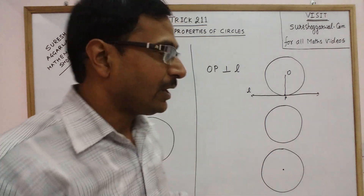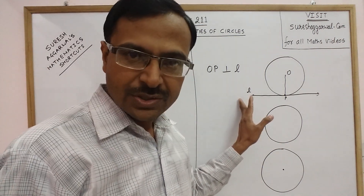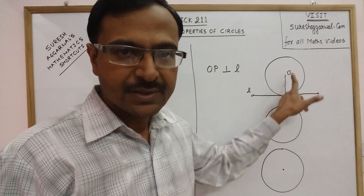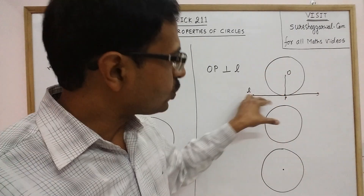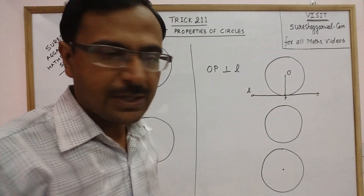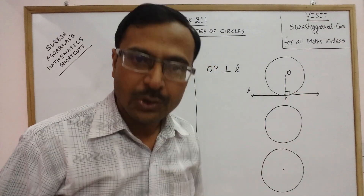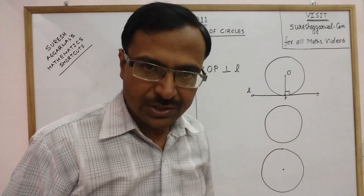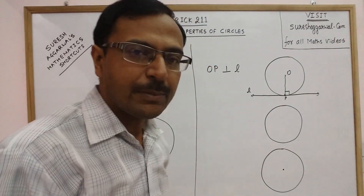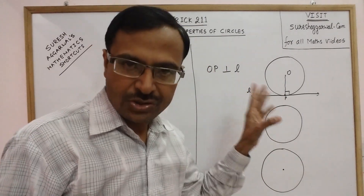So if you draw one tangent and from the point of contact you draw a radius, these two lines will always be at a 90 degree angle to each other. This is a very important and very basic property of a tangent.